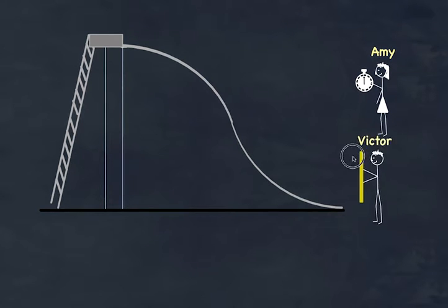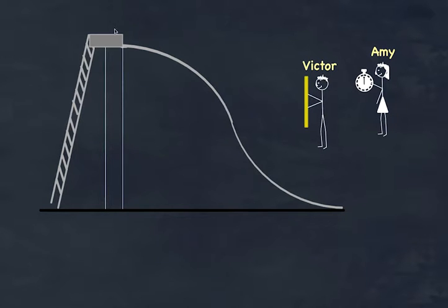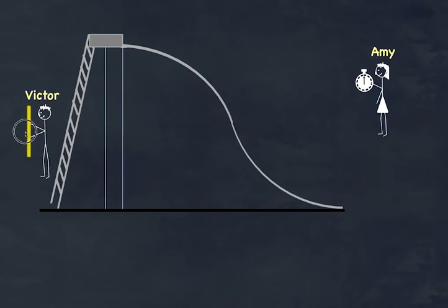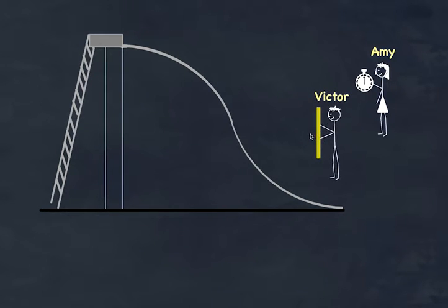I'm also going to bring Victor along. Victor is not interested in how many people there are — he's interested in the thrill-seeking aspect, specifically the height, because the higher you go, the faster you go down. He's interested in energy, and he measures it by measuring how much height is gained. He measures how much each individual person — say, Freddy — climbs up the stairs.